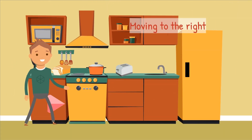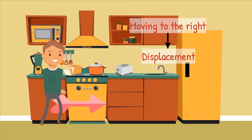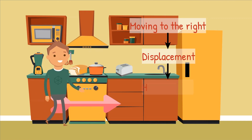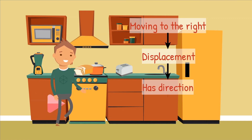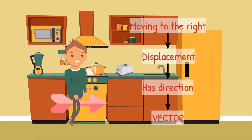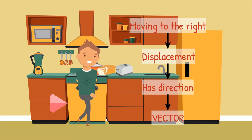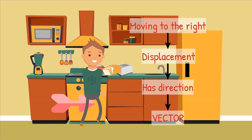Mike is moving to the right towards the toaster with his bread. This is displacement. Displacement has a direction. Therefore, it is a vector quantity.